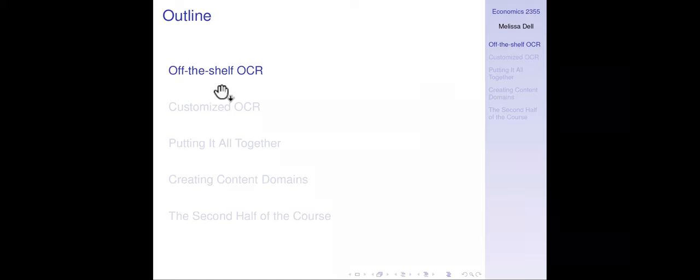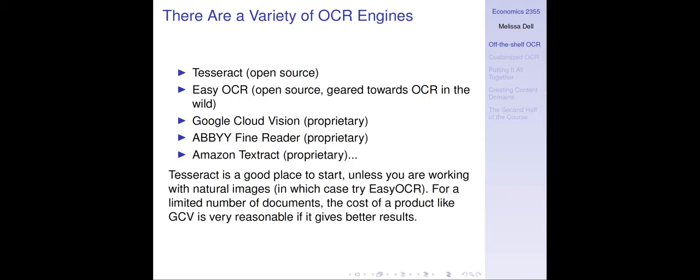I want to start by talking about off-the-shelf OCR software. There are a variety of OCR engines you could use: Tesseract, which is open source, and EasyOCR, which is open source but geared towards OCR in the wild — OCR of text contained in natural images. There are also proprietary options like Google Cloud Vision, ABBYY FineReader, and Amazon Textract.